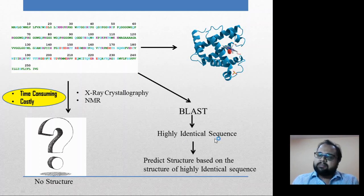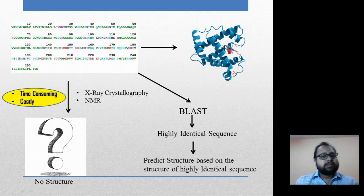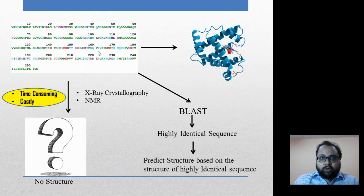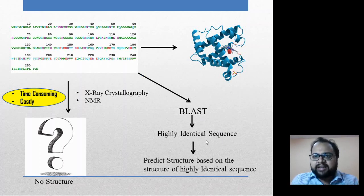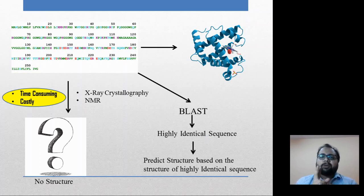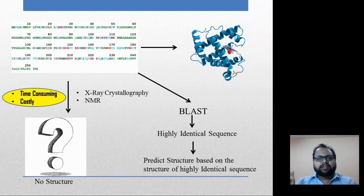If we say that our sequence and some other sequence are highly identical, that highly identical sequence should have a known protein structure. If it has a known protein structure, we can also predict a protein structure for our sequence. For example, if BLAST gives 90% identity with another sequence, then the two sequences are 90% identical — meaning their structures will also be 90% identical, because structure is derived from sequence.